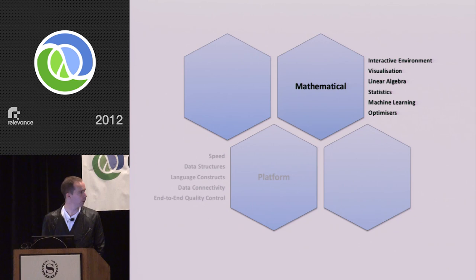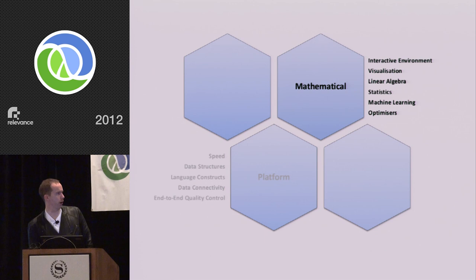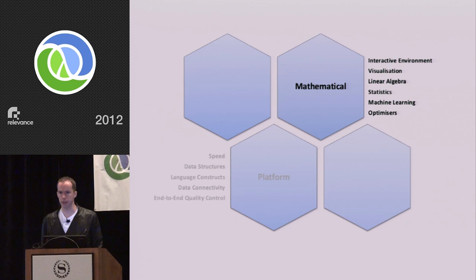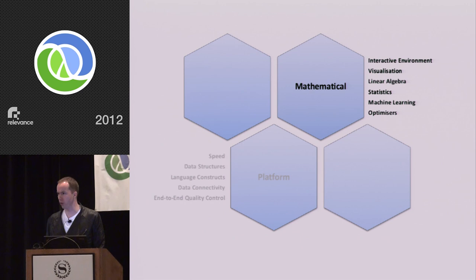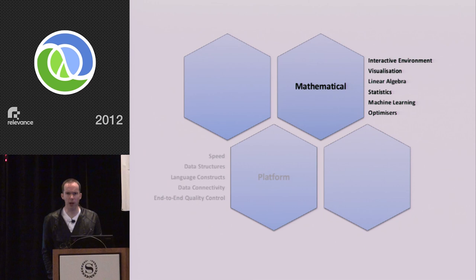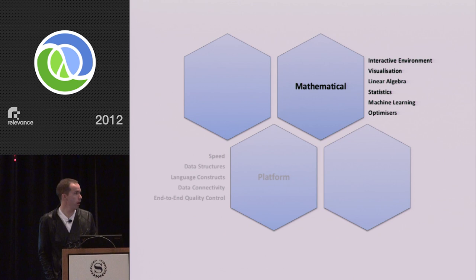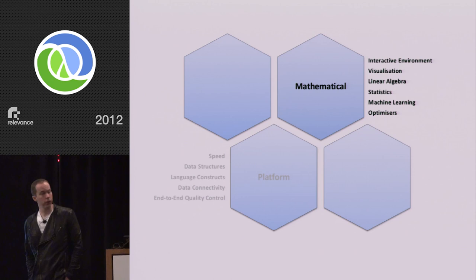So these things solve one part of our problem. They have a mathematical abstraction. They give you an interactive environment, and that's absolutely critical for doing any sort of mathematical exploration. You have to be able to poke your data, prod at it, throw some curves up, change it, play with it and see what's going on. You can't do that without it. Visualization is part of that. Then the actual tools that they provide you, things like linear algebra, statistics, machine learning, and optimization, all of those are available as libraries.